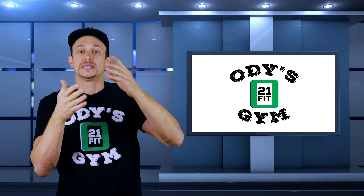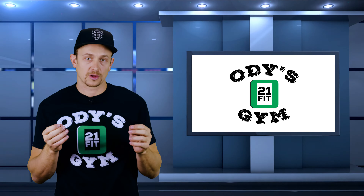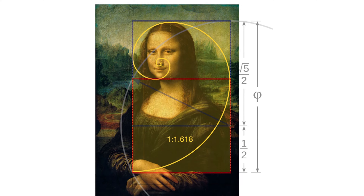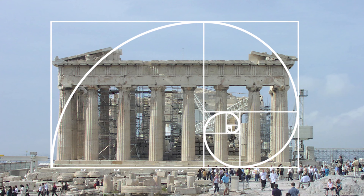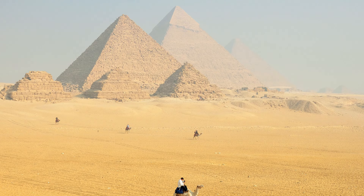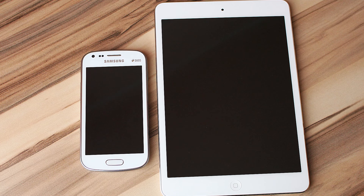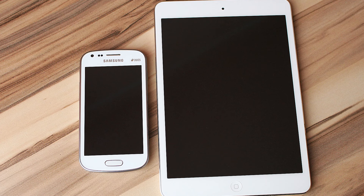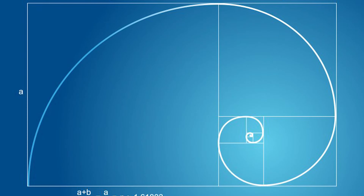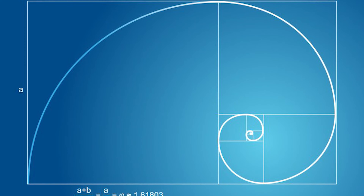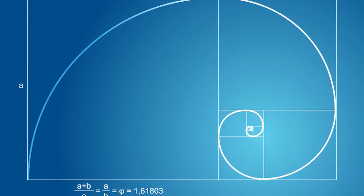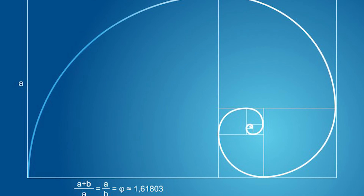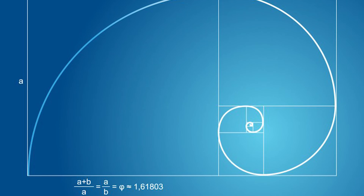This ancient number sequence is found in many other places too, like the Mona Lisa, the Parthenon, the pyramids, even our TVs, tablets, and iPhones. They're all designed with the golden ratio, also known as the golden mean, which is 1.618.